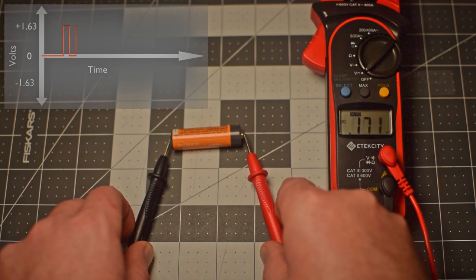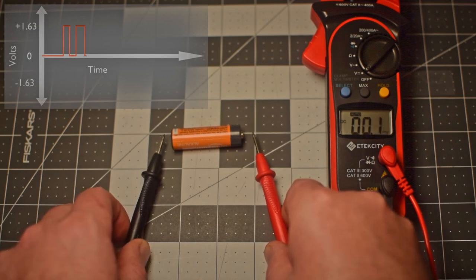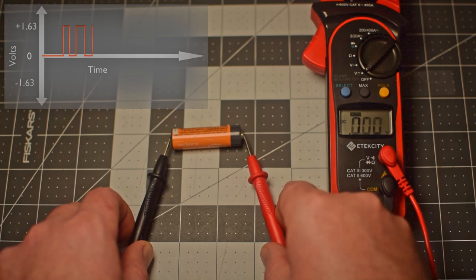As I do that, a current, a movement of electricity, begins to move through the meter, and following some math, a number is now displayed on my screen. 1.63 volts.